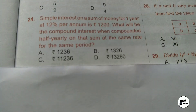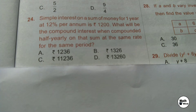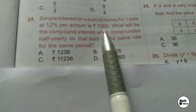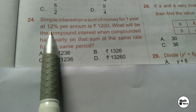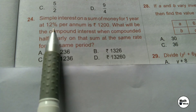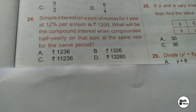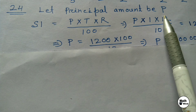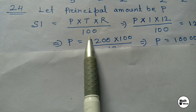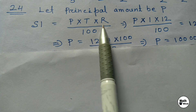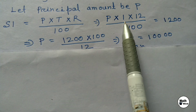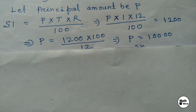Question 24: Simple interest on a sum of money for 1 year at 12% per annum is ₹1,200. What will be the compound interest, compounded half-yearly, on that sum at the same rate for the same period? In this question, simple interest, time period, and rate of interest are given, but the principal amount is not given. So we let the principal amount be P. Using SI formula P×T×R/100 with T=1 and R=12, and SI=1,200, solving gives P = 10,000.